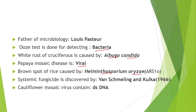Systemic fungicide was discovered by Van Schmaling and Kulka in 1966. Cauliflower mosaic virus contains double-stranded DNA, and the Gemini virus contains single-stranded DNA.